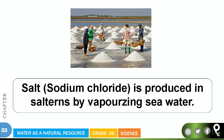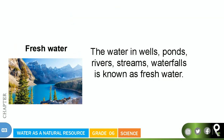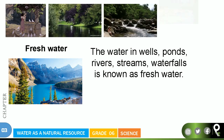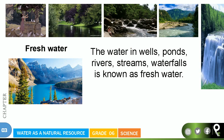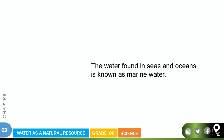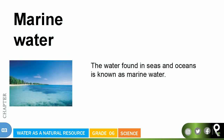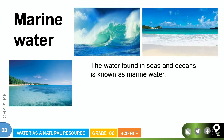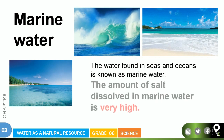Fresh water — the water in wells, ponds, rivers, streams, and waterfalls — is known as fresh water. The amount of salt dissolved in fresh water is very low. They don't say it is zero, but it is very, very low. Marine water — the water found in seas and oceans — is known as marine water, and the amount of salt dissolved in marine water is very high.